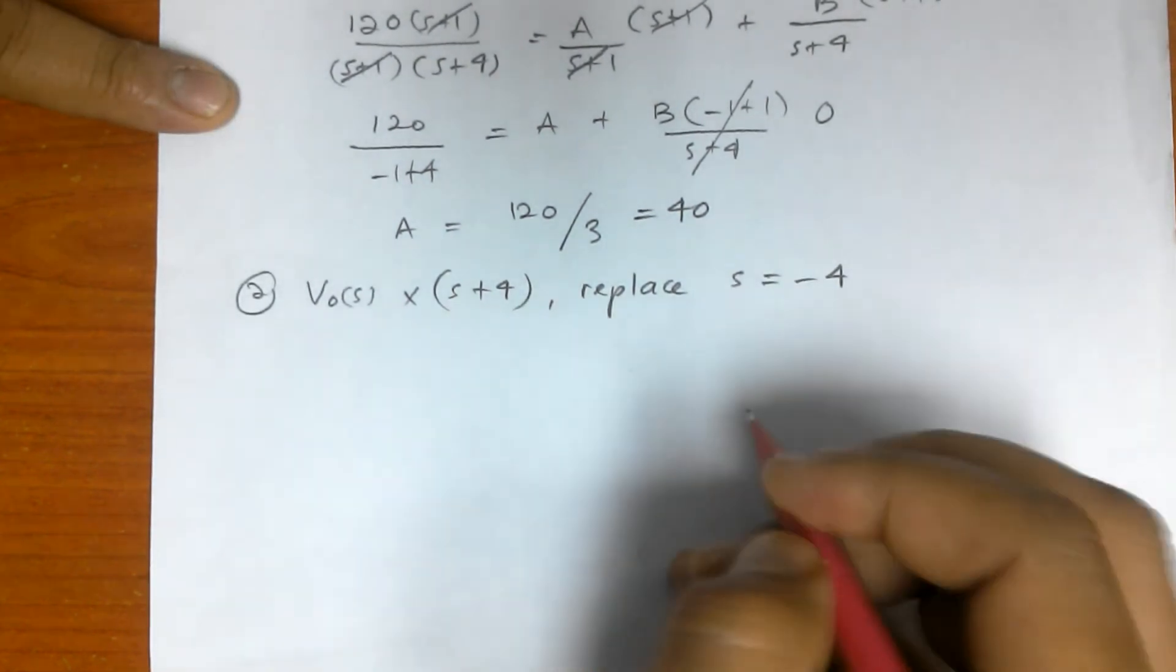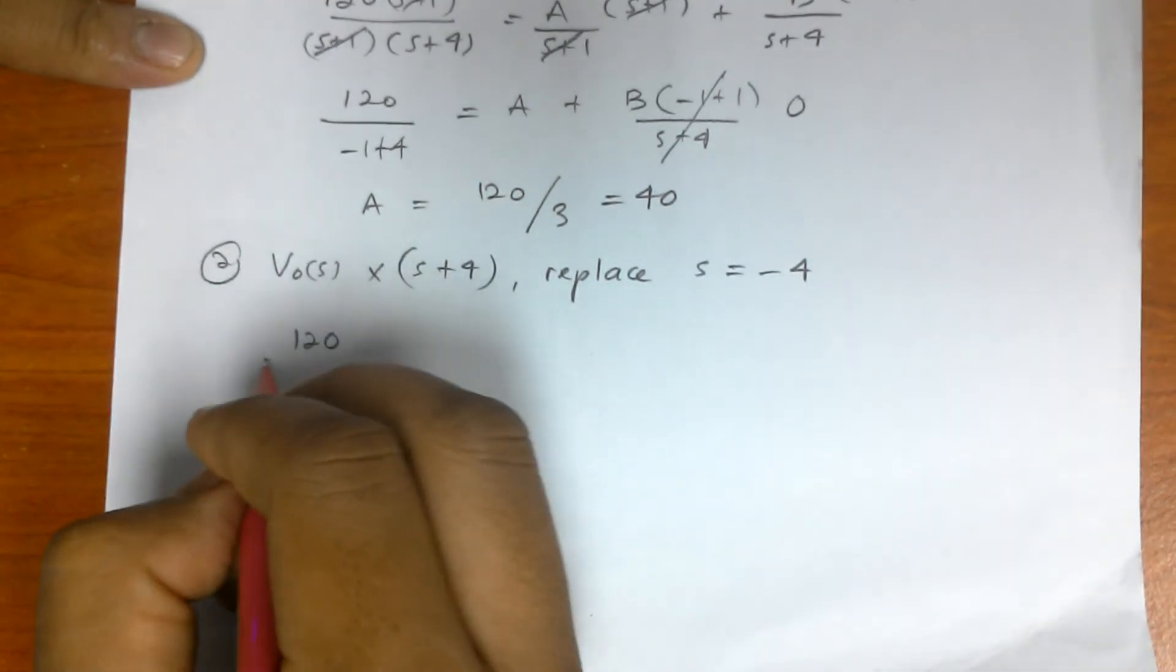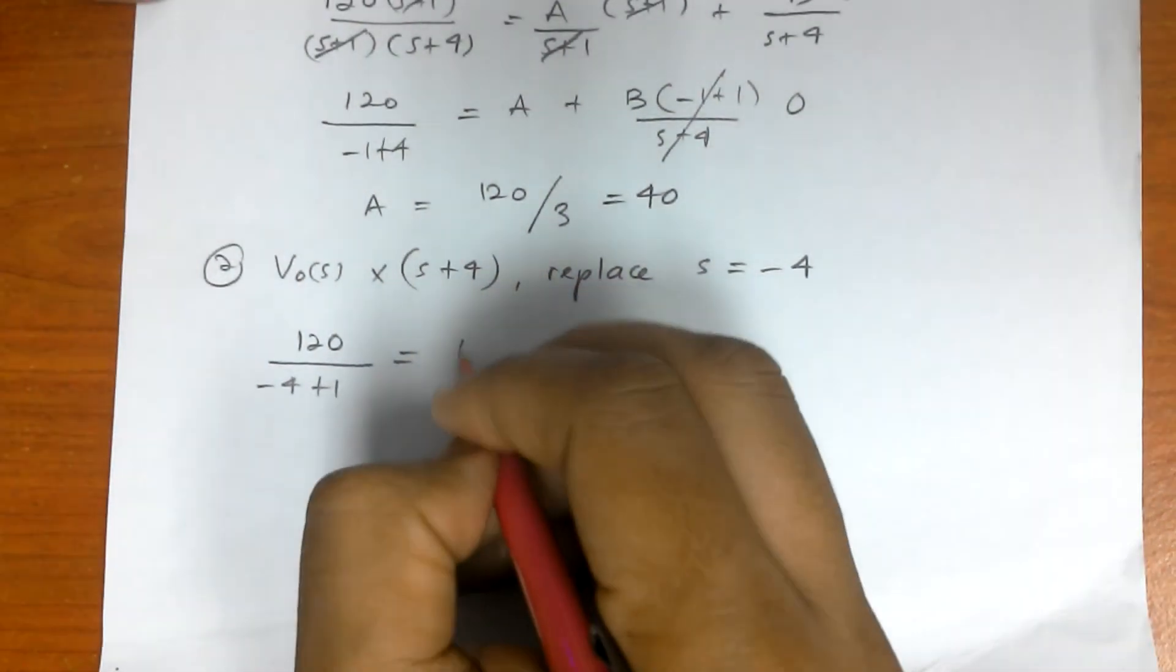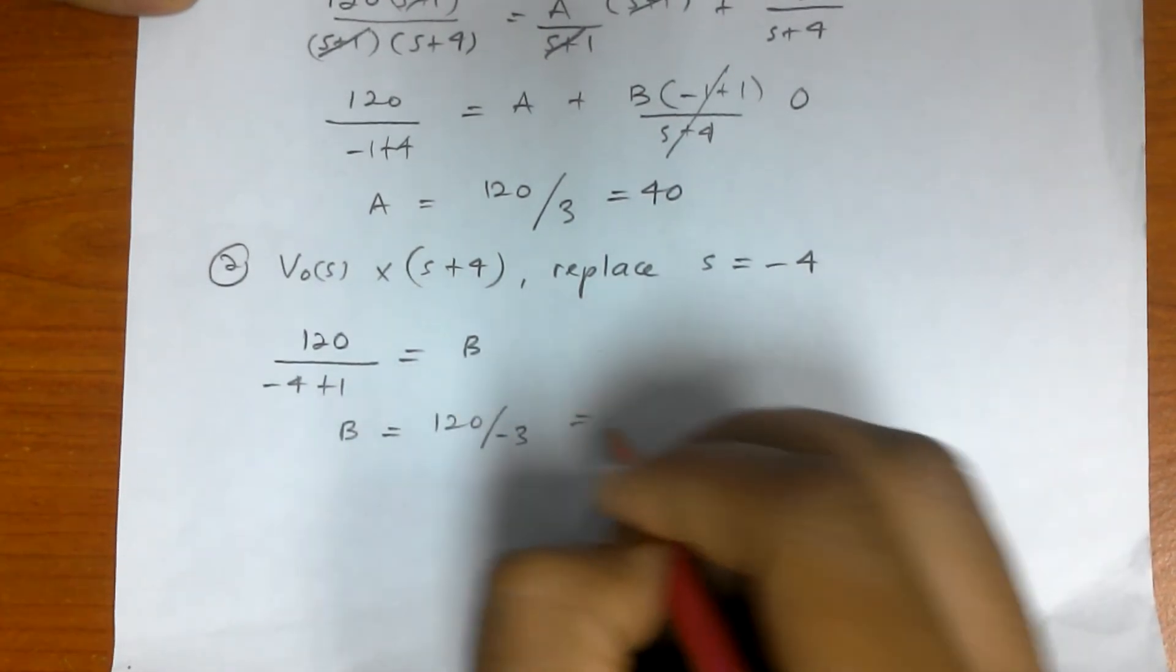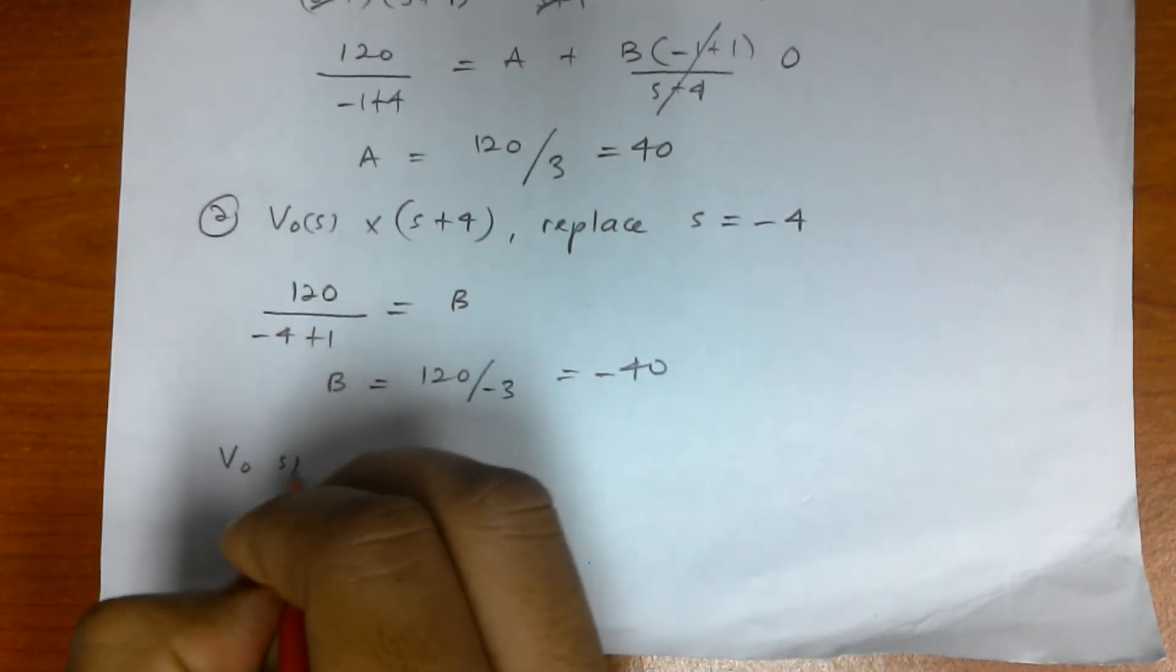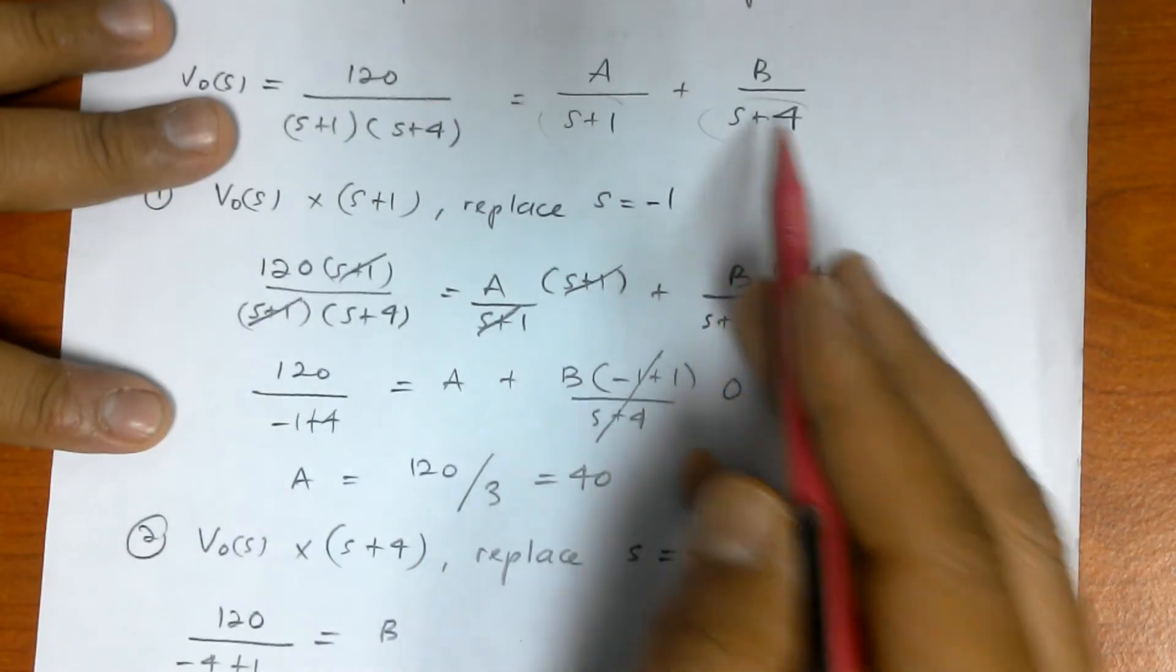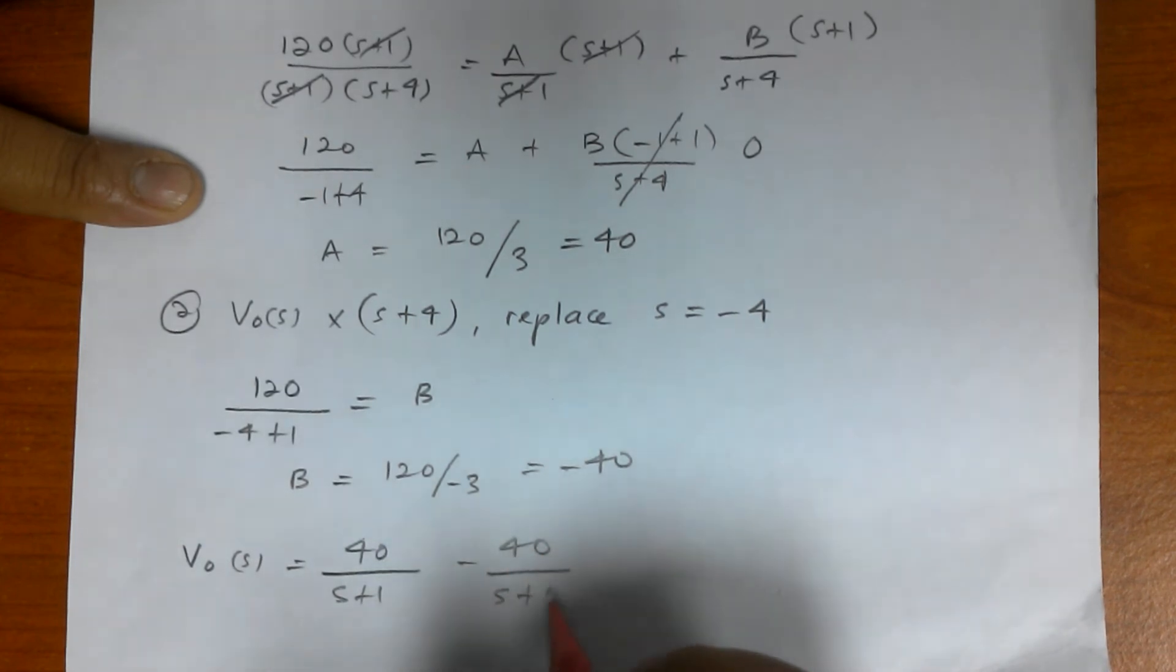Same thing to find the term B: V out S times S plus 4, and then replace S with negative 4. We get 120 over negative 4 plus 1 equals B. So B is 120 over negative 3, which is negative 40. Now V out S equals 40 over S plus 1 minus 40 over S plus 4.